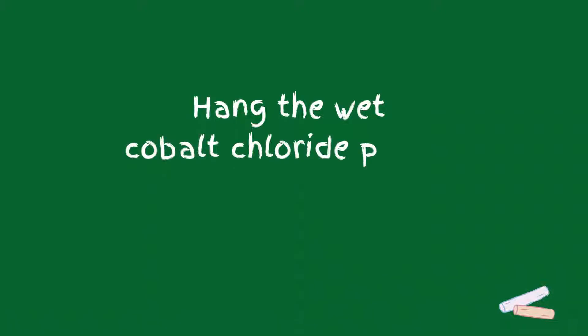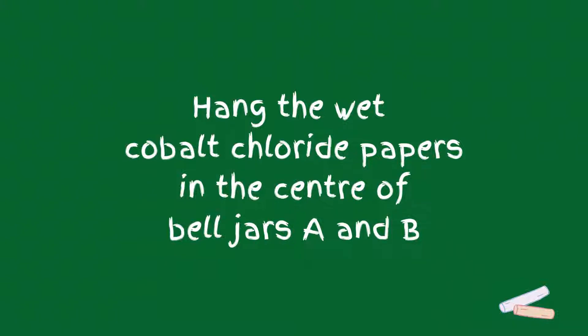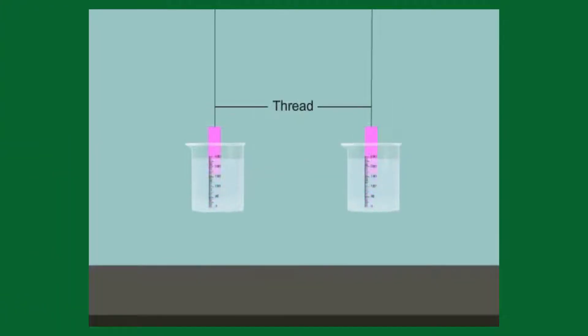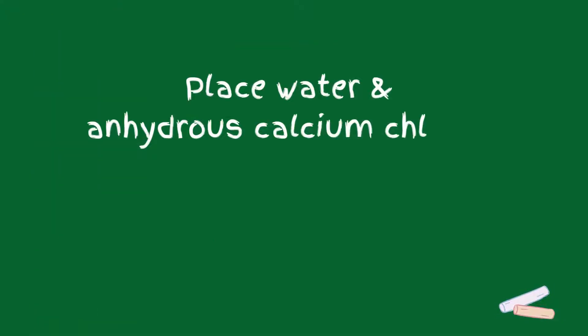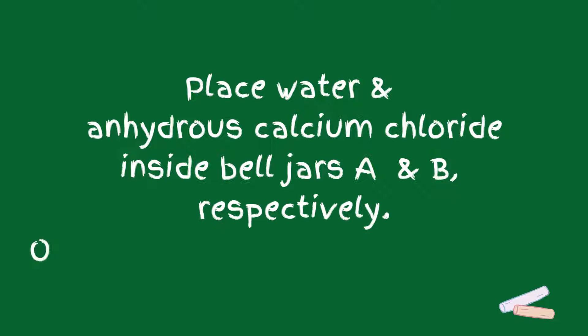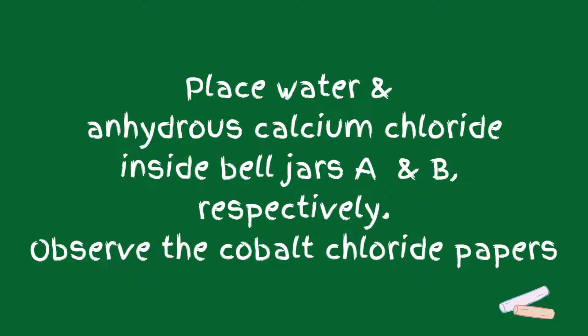First, hang the wet cobalt chloride papers in the center of bell jars A and B. Place water and anhydrous calcium chloride inside bell jars A and B, respectively.